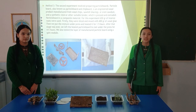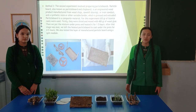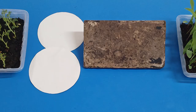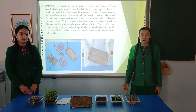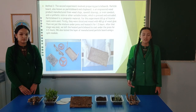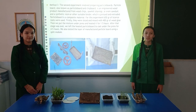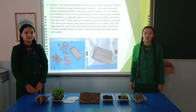Third method: the experiment involved preparing particle boards. Particle board, also known as chipboard, is an engineered wood product manufactured from wood chips, shavings, or sawdust, and a synthetic resin or other suitable binder which is pressed and extruded — it is a composite material. For this experiment, 650 grams of lycorine roots were used. They were sliced and mixed with 400 grams of wood, then the mixture was put under a press and heated.